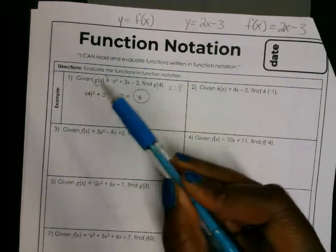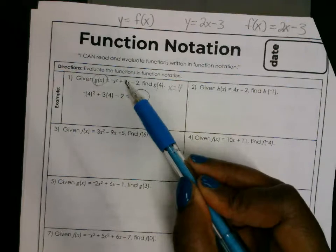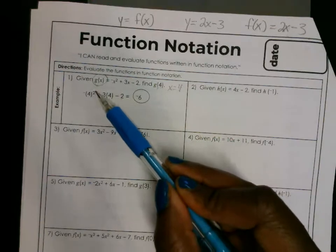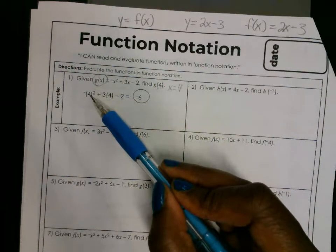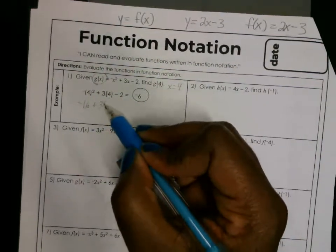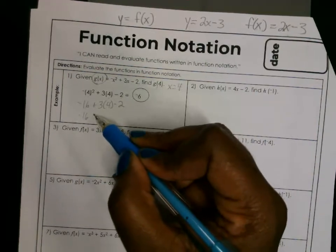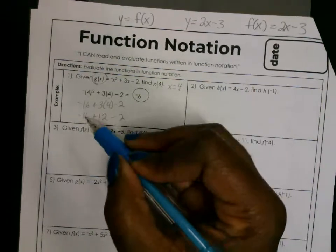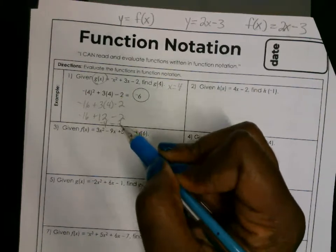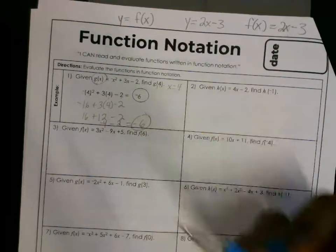So this is going to be a negative. You put 4 to the second power, plus 3 times 4, minus 2. Order of operations tells us to do exponents first, so that's 16. Bring down the negative: negative 16 plus 3 times 4, minus 2. Multiply next: negative 16 plus 12, minus 2. Negative 16 plus 12 gives negative 4, minus 2 is negative 6. Negative 6 is your answer.